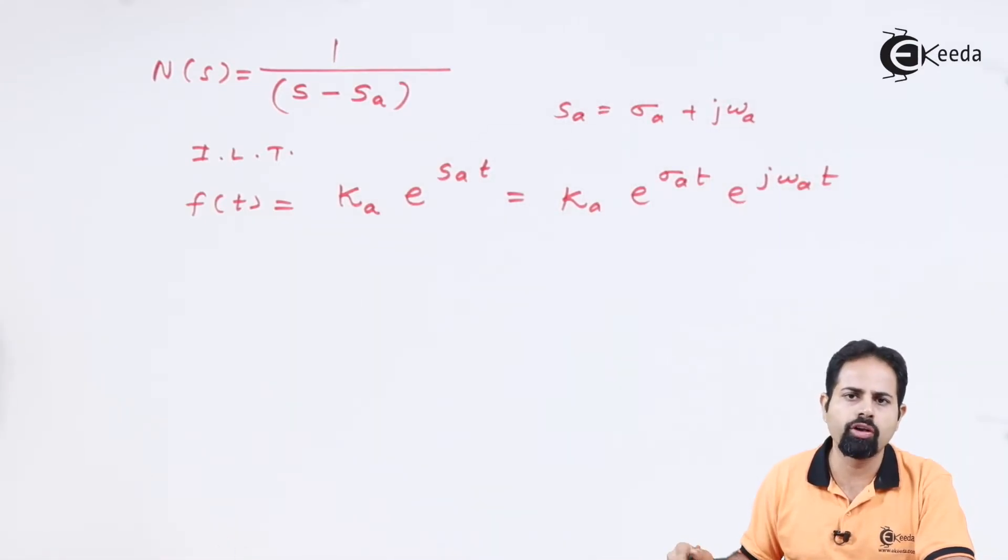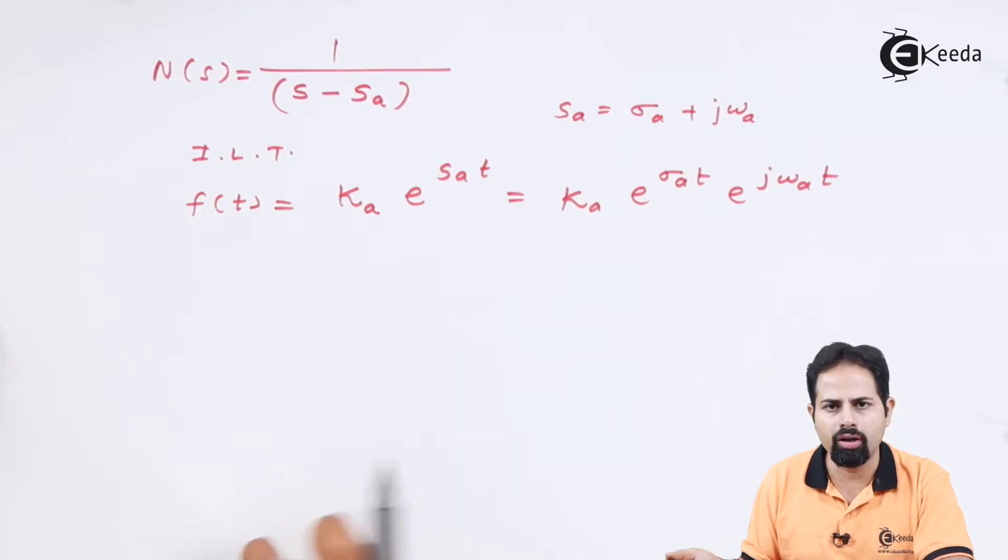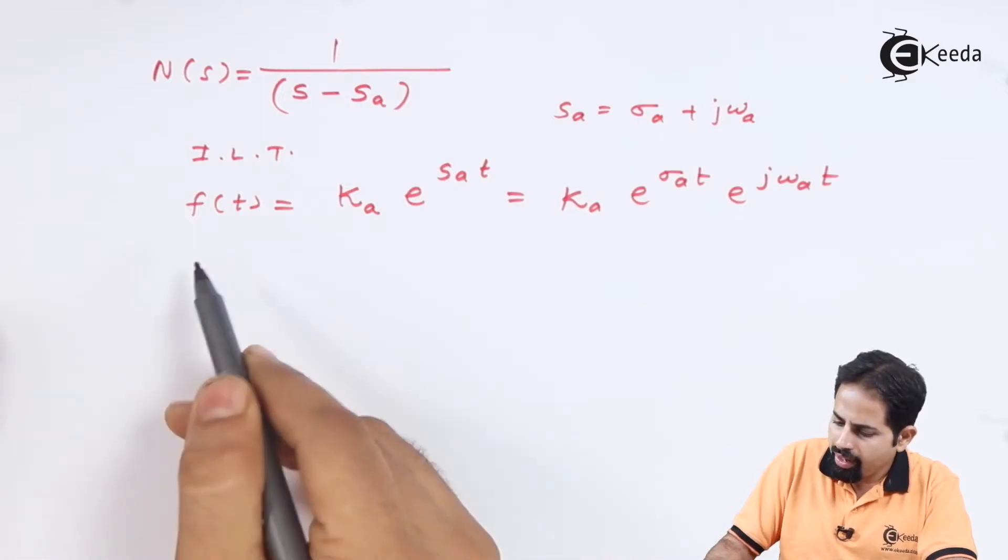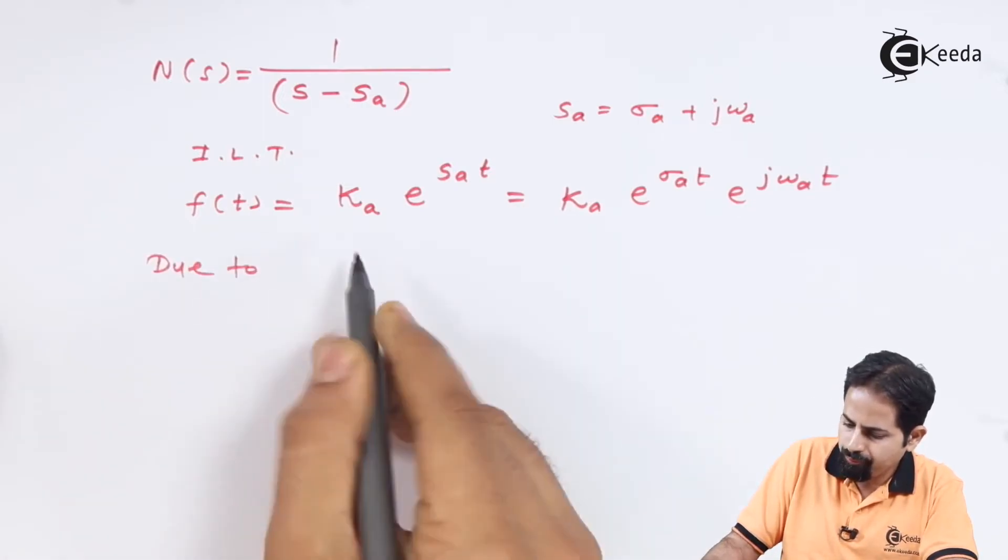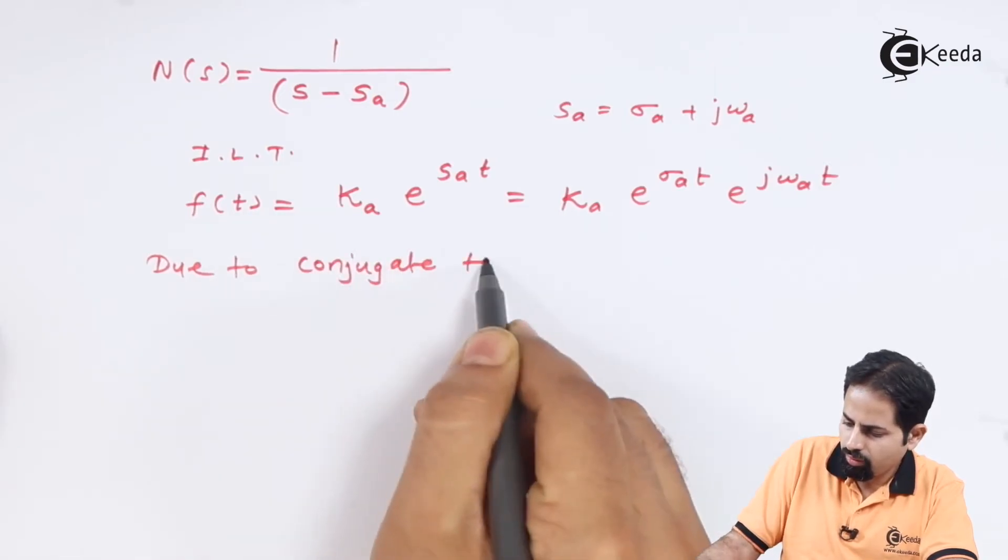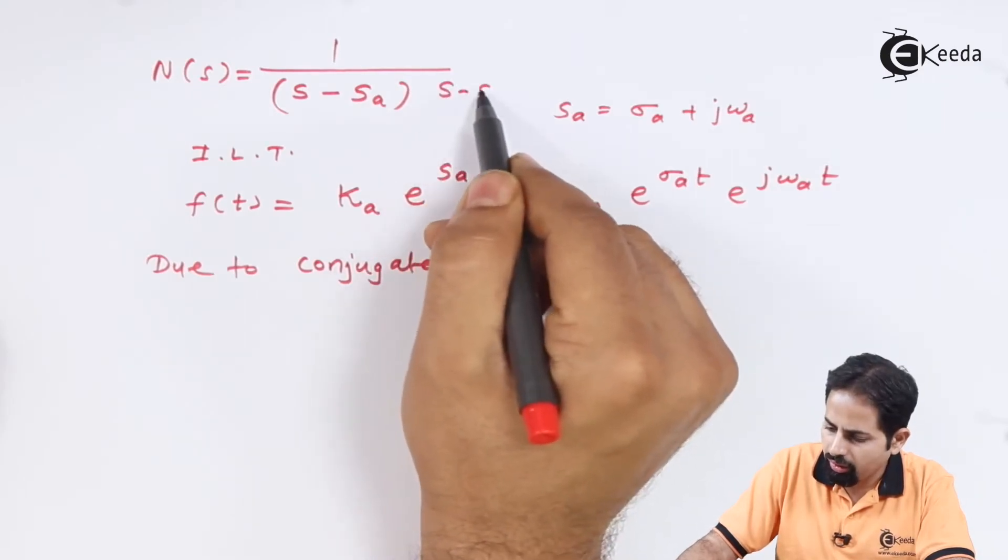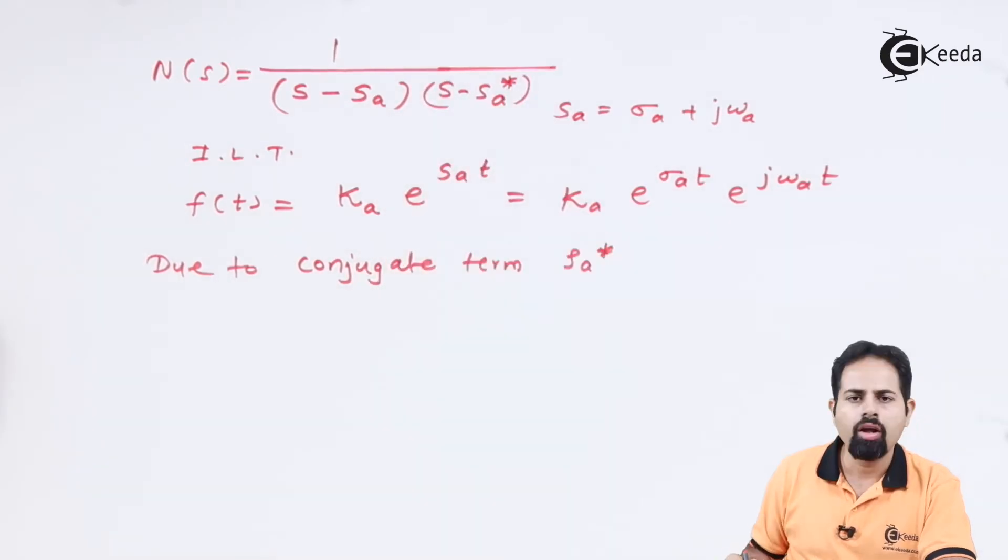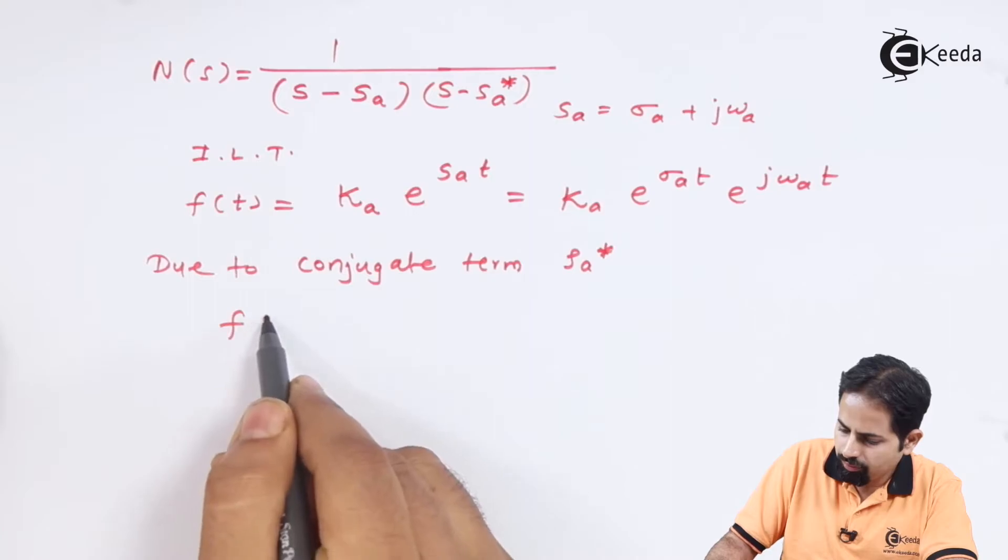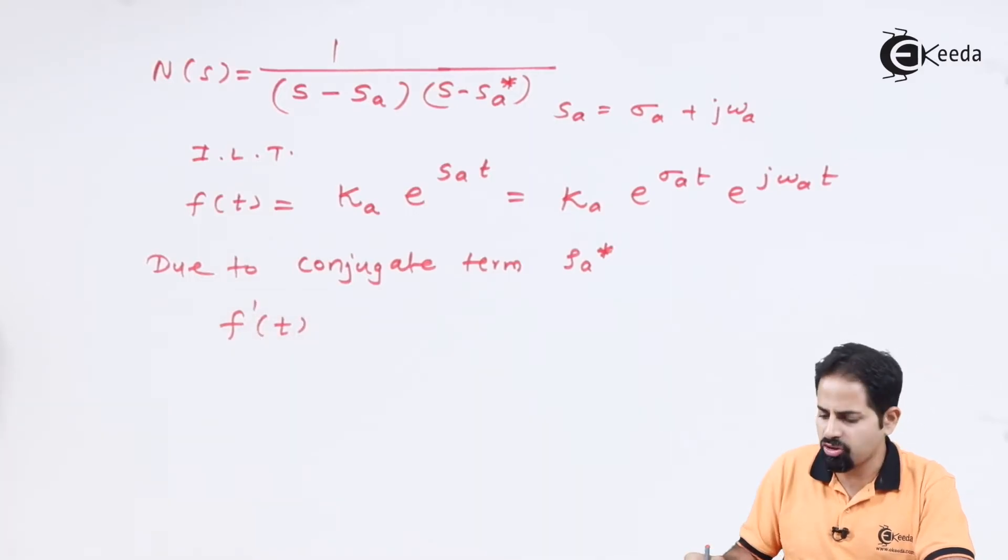Now, we know that obviously this SA is complex. So if it is complex, there has to be one more pole, which we just saw a rule before this. And due to conjugate term, that is SA conjugate, which is going to occur here.